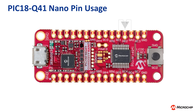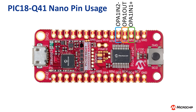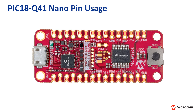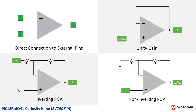In terms of analog functionality, pins RC1, RC2, and RA2 are used. Pin RC2 is the output of the operational amplifier, whereas RC1 and RA2 function as the inverting and non-inverting inputs. There are four configurations on the Curiosity Nano.